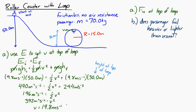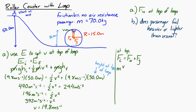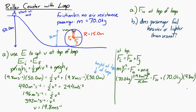At the top of the loop, the centripetal force equals the normal force plus the weight. Both the normal force and gravitational force point downward — toward the center — so the centripetal force is the sum of those two. We write MV² / R equals the normal force plus MG. This equation relates only magnitudes, so we don't put a negative sign with G.